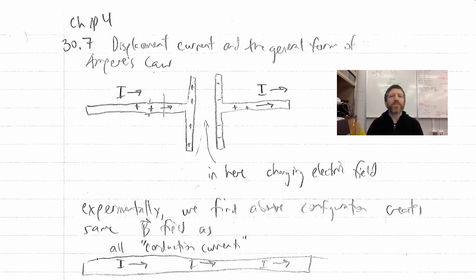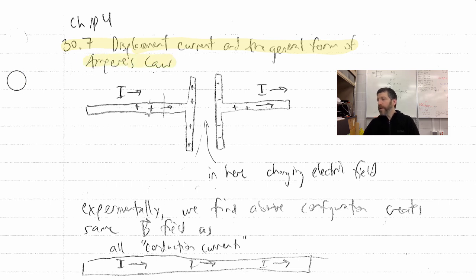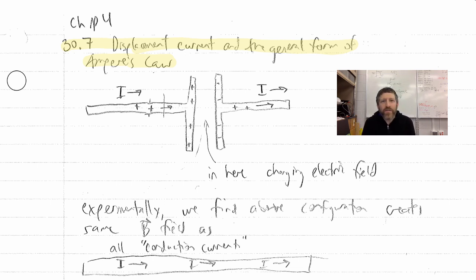Now we get to displacement current and the general form of Ampere's Law — this is where the real fun begins. Here is a mystery that was solved by Maxwell. Faraday had figured out pretty much all this stuff, but there was something that just did not compute and didn't even work with Ampere's Law. Then Maxwell made his addition to Ampere's Law that made it all make sense.